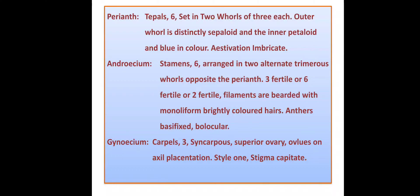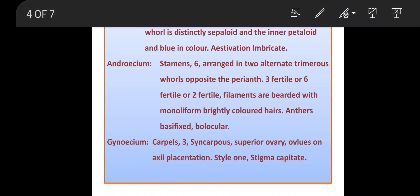Gynoecium: the number of carpels is three. The ovary is united, forming a tricarpellary syncarpous superior ovary with axile placentation. Style is one and the stigma is capitate.